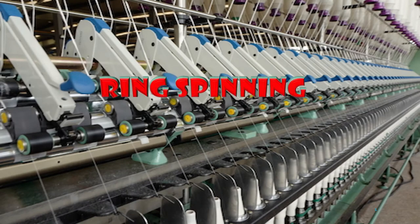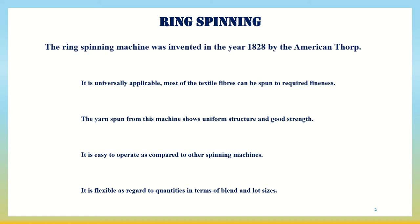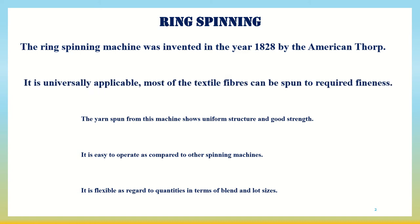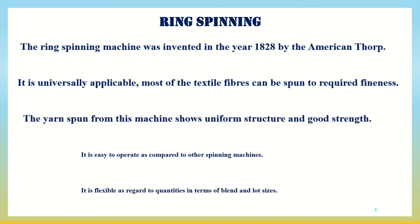Ring spinning machine was invented in the year 1828 by American Thorpe. It is universally applicable — most textile fibers can be spun into the required fineness. The yarn spun from this machine shows uniform structure and good strength.